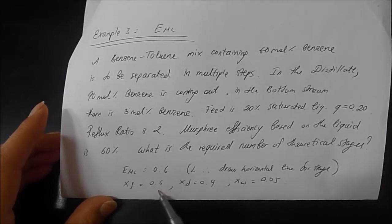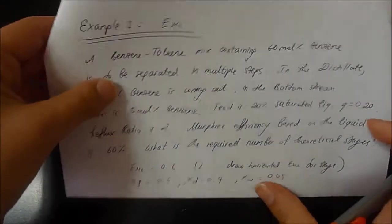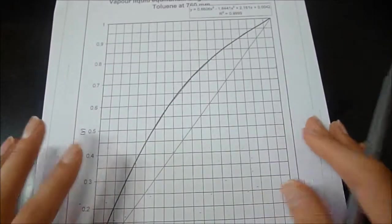XF is equal to 0.6, which is the benzene mole fraction. The distillate is 0.9, XW is 0.05. So this is our graph.